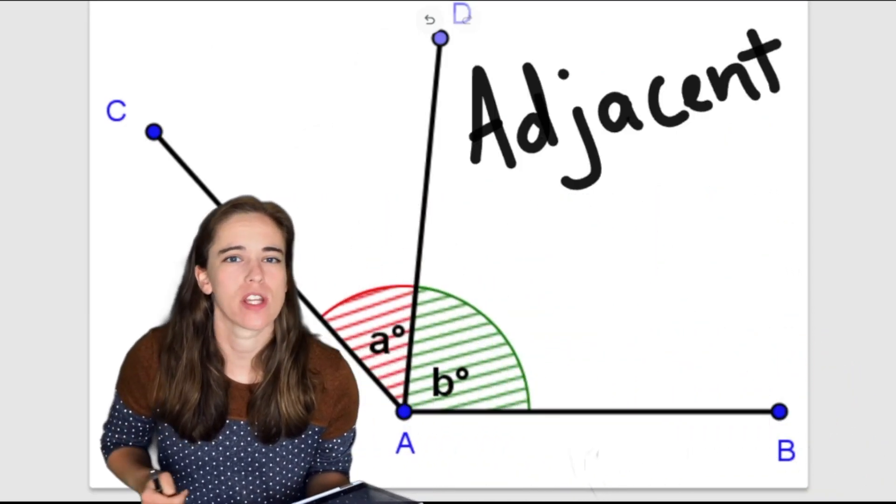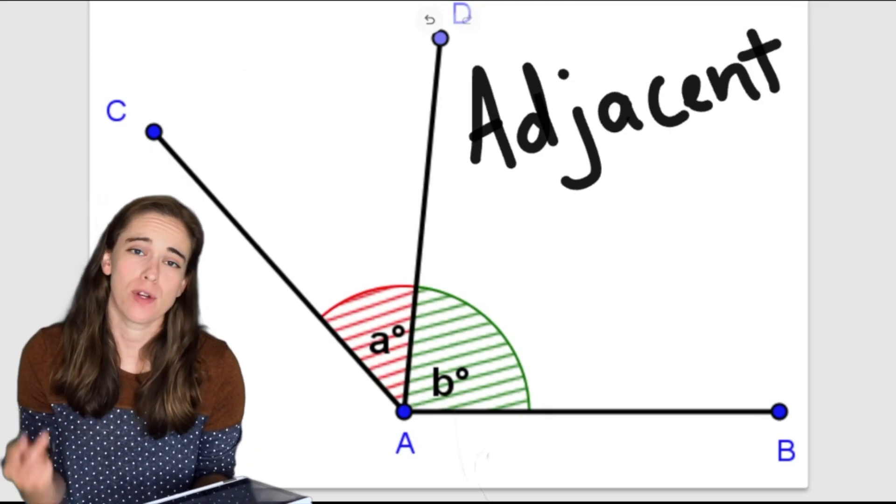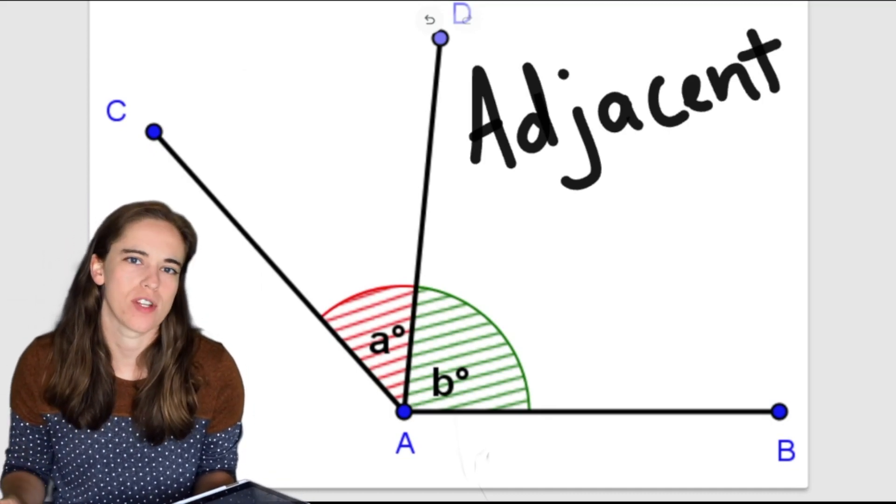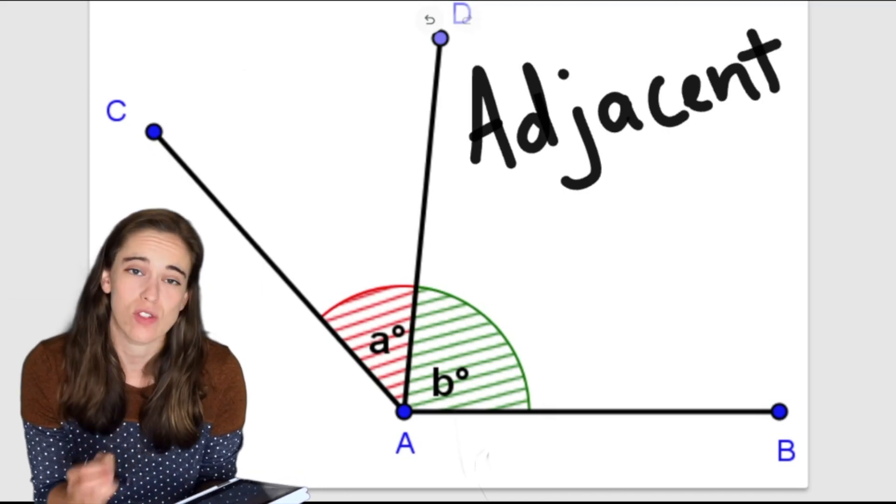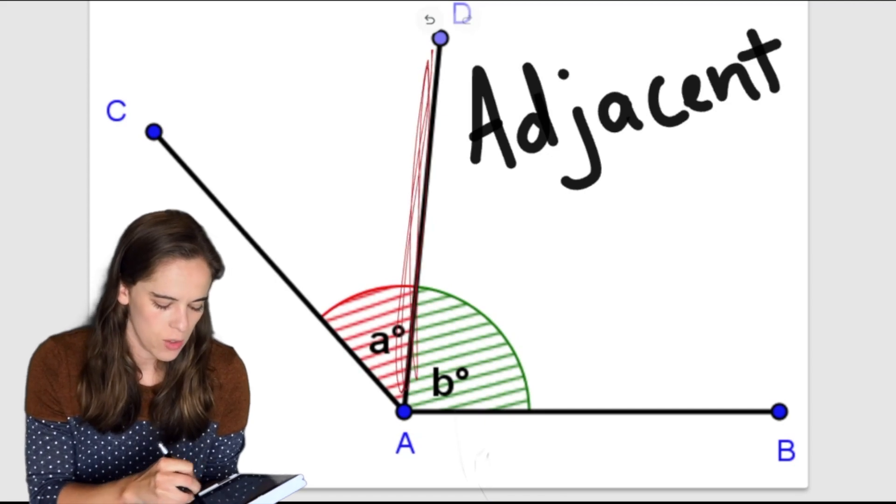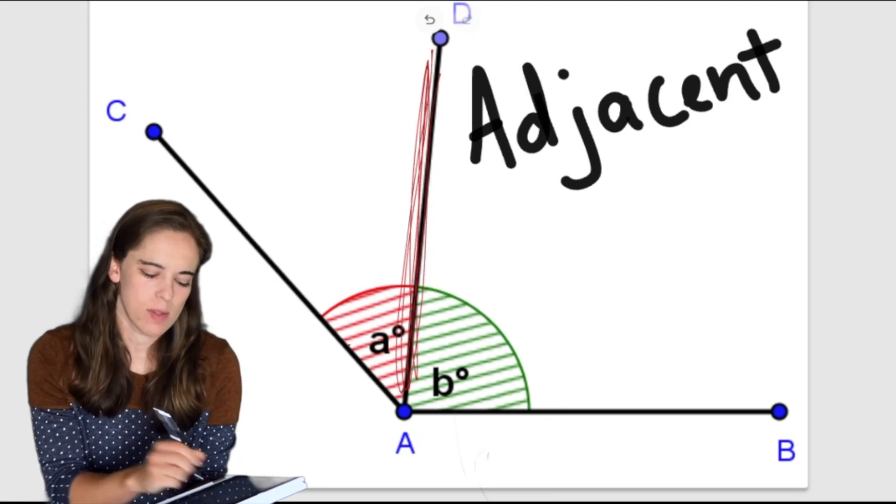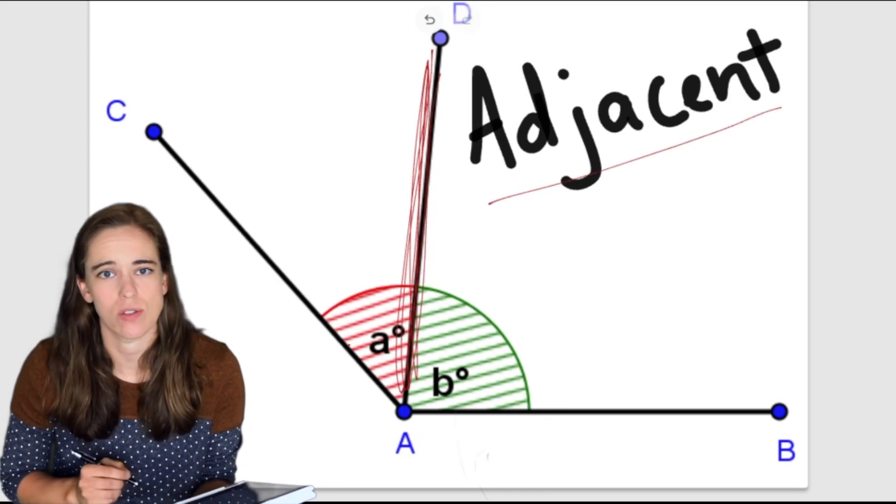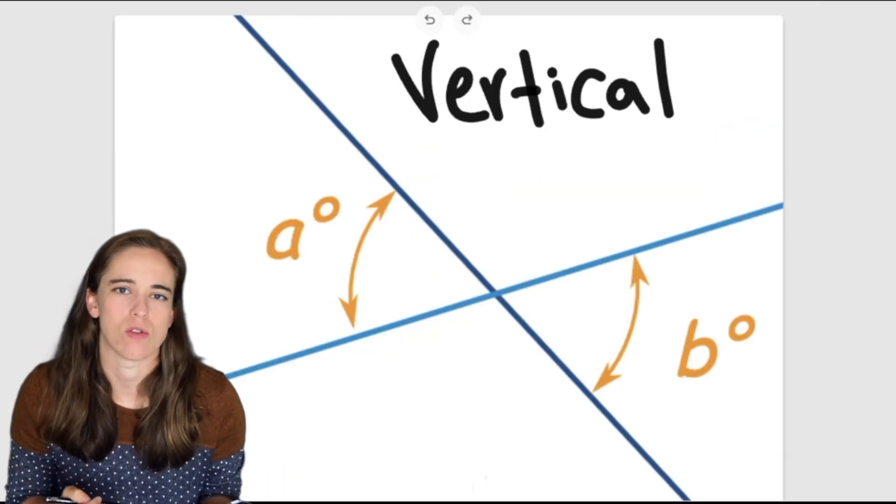All right our third angle relationship for today is the adjacent angle and actually our previous two ones the complementary and the supplementary angles were also both examples of adjacent angles. Adjacent just means that these two angles are side by side so they are sharing one leg right here. So we have angle A angle B we don't know the measures in this case but since they're side by side we consider those to be adjacent angles.